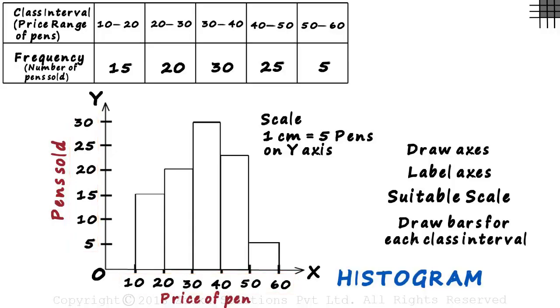What we did here was simple. We choose a scale and draw bars for each continuous interval. But note that the intervals were continuous. 20, which is the upper limit of the first interval, is used as the lower limit for the next interval. But what if the intervals are discontinuous? We will understand that in another video.